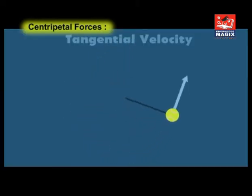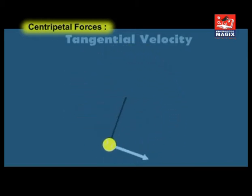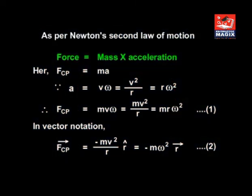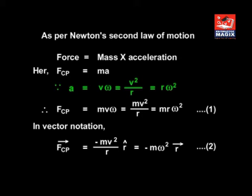Since centripetal force acts at right angles to the tangential velocity of the particle, there is no displacement in the direction of force, and hence no work is done by centripetal force. As per Newton's second law, F = ma, where a = vω = v²/R = Rω². Therefore, FCP = Mvω = Mv²/R = MRω². In vector notation, F̄CP = Mω²R̄.